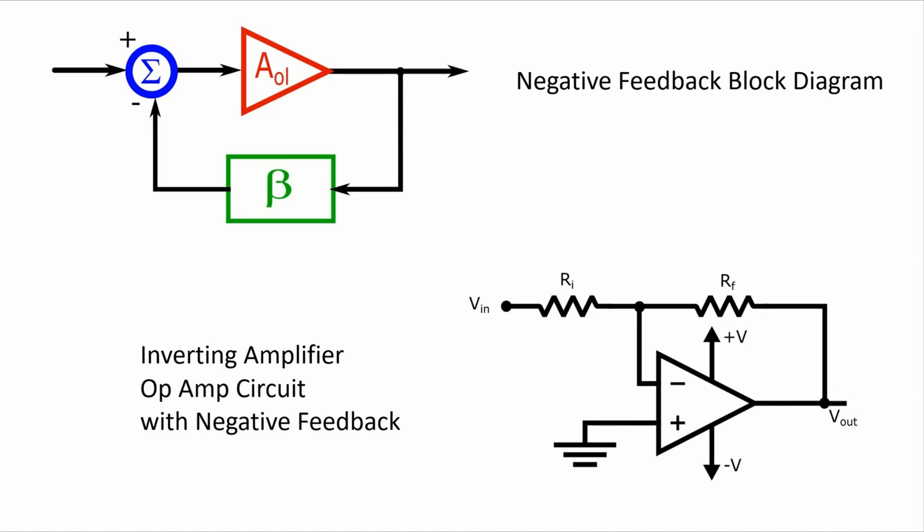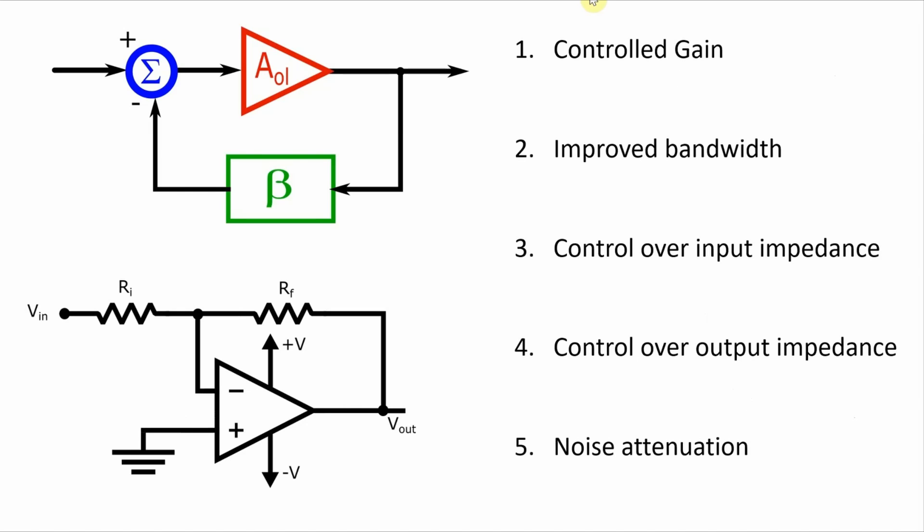If you've seen my previous video about negative feedback for op amps, you'll know that negative feedback brings all sorts of advantages. It can bring controlled gain, it can improve the bandwidth, it can give you control over the input impedance and control over the output impedance.